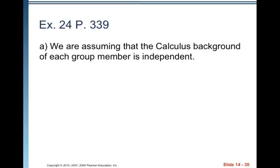All right. Example 24, part A says, it's referring back to problem 22. It says you use the multiplication rule to calculate probabilities about the calculus background of your statistics group mates in exercise 22.